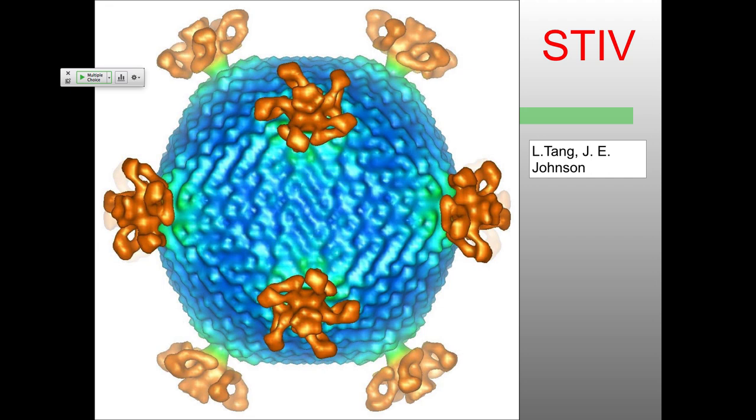To finish up, I wanted to talk about STIV — Sulfolobus turreted icosahedral virus, one of my favorites because I discovered it. In terms of the overall structure, it has nice icosahedral symmetry with five-fold axes of symmetry. T equals 31, with hexameric structures having these double beta-barrel motifs. I want to talk about one thing that Mark Young's group at Montana State University discovered after I left the lab.